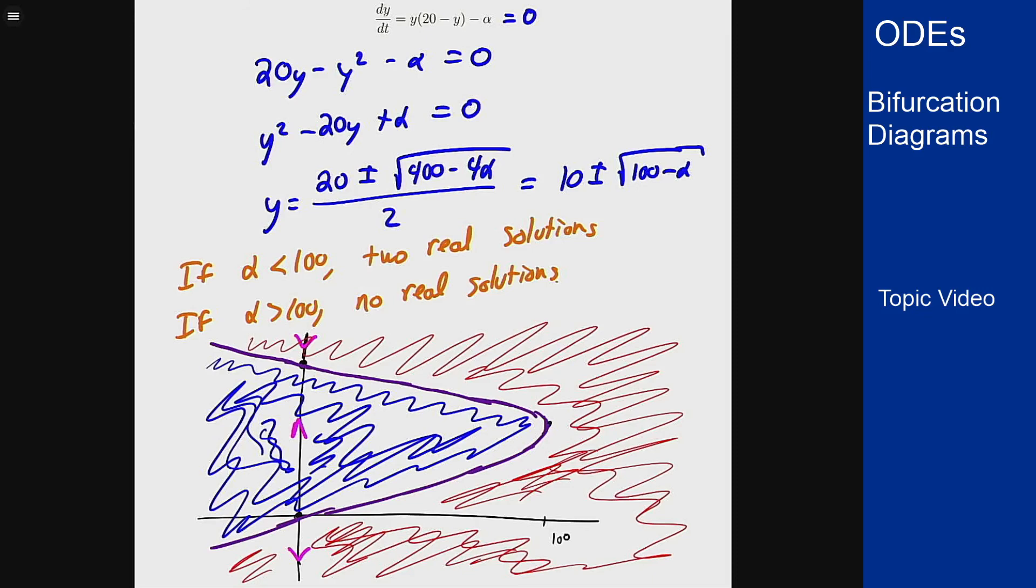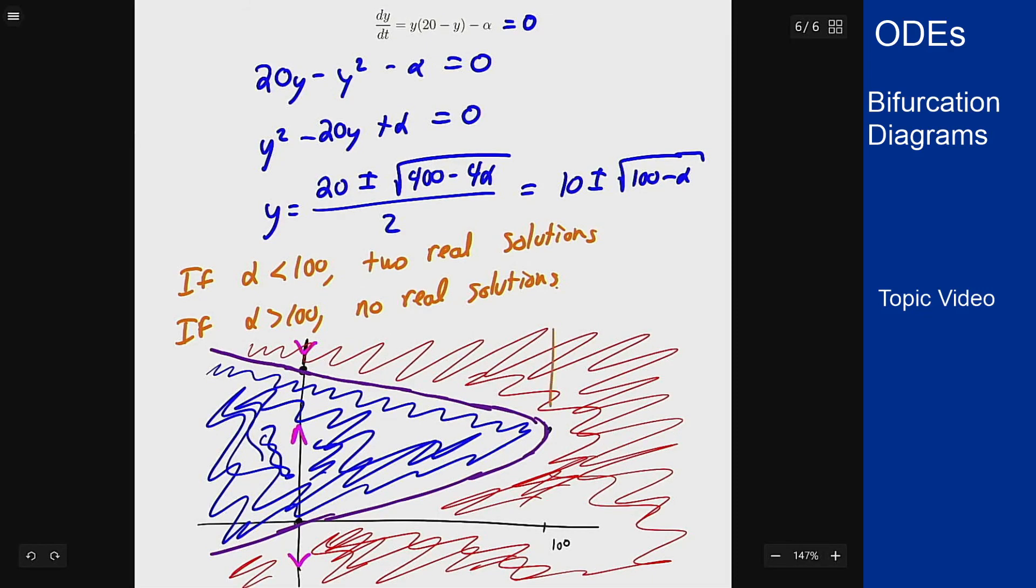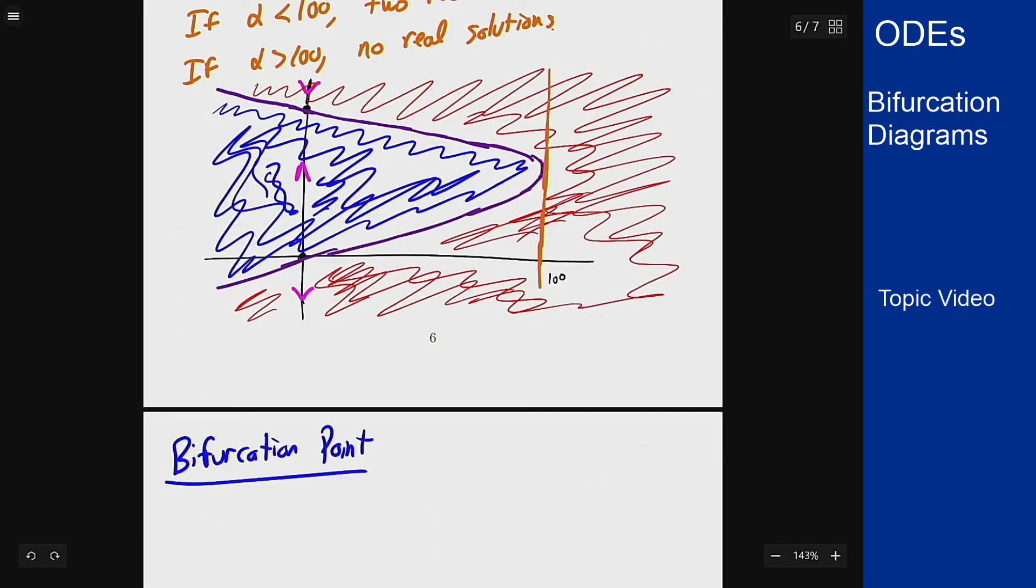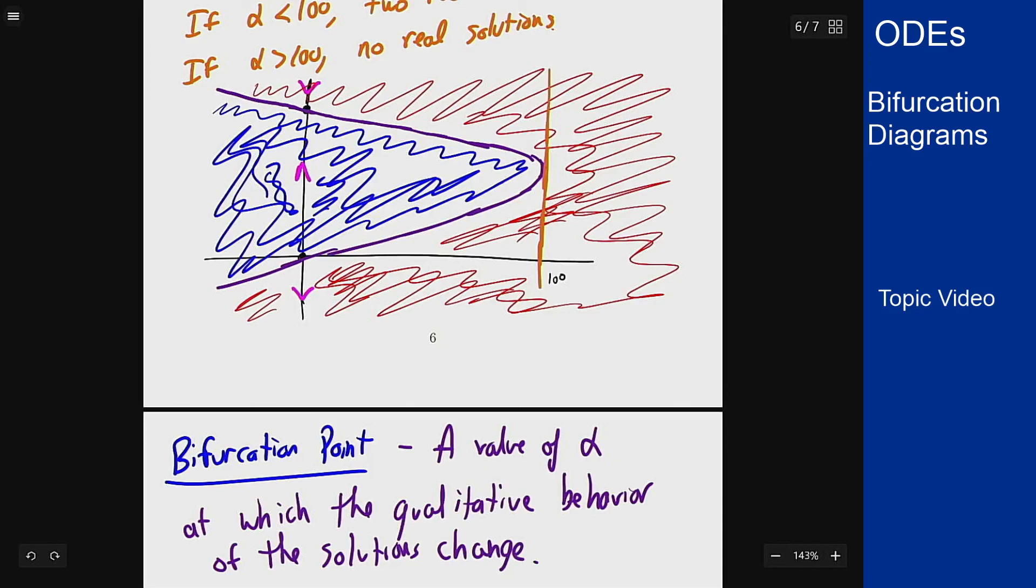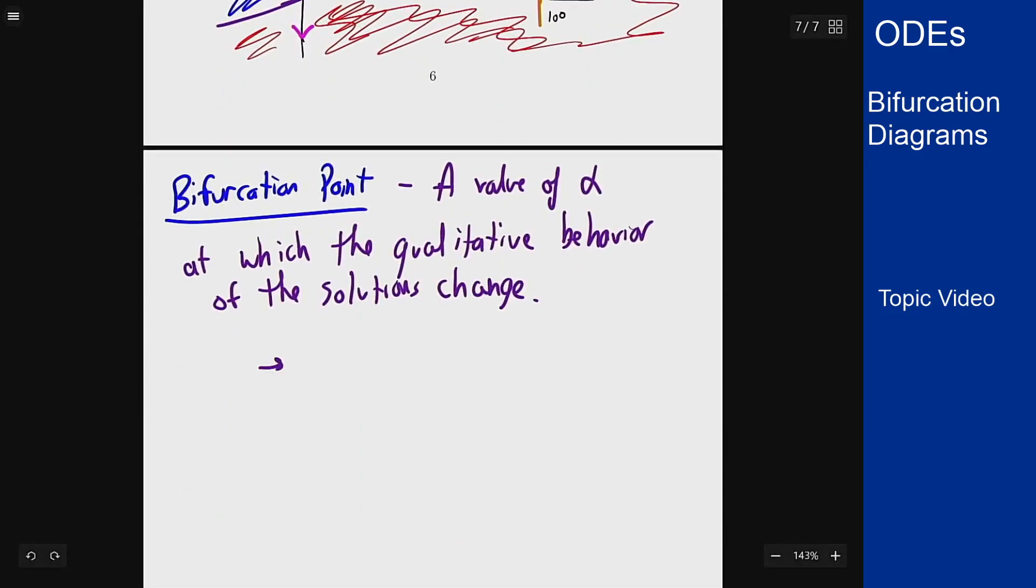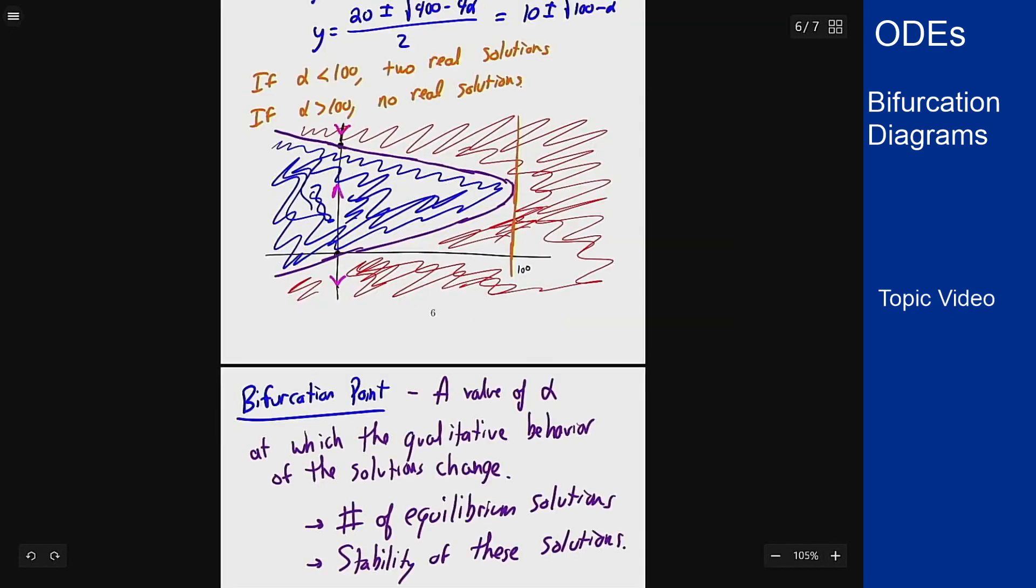We notice something happens at alpha equals 100. This is a bifurcation point, something changes. The phase line goes from having two solutions on this parabola to having none. A bifurcation point is a value of alpha at which the qualitative behavior of these solutions changes. By qualitative behavior, that's things like number of equilibrium solutions or stability of these solutions. In this case we see a bifurcation point at alpha equals 100 where I go from two equilibrium solutions down to zero.